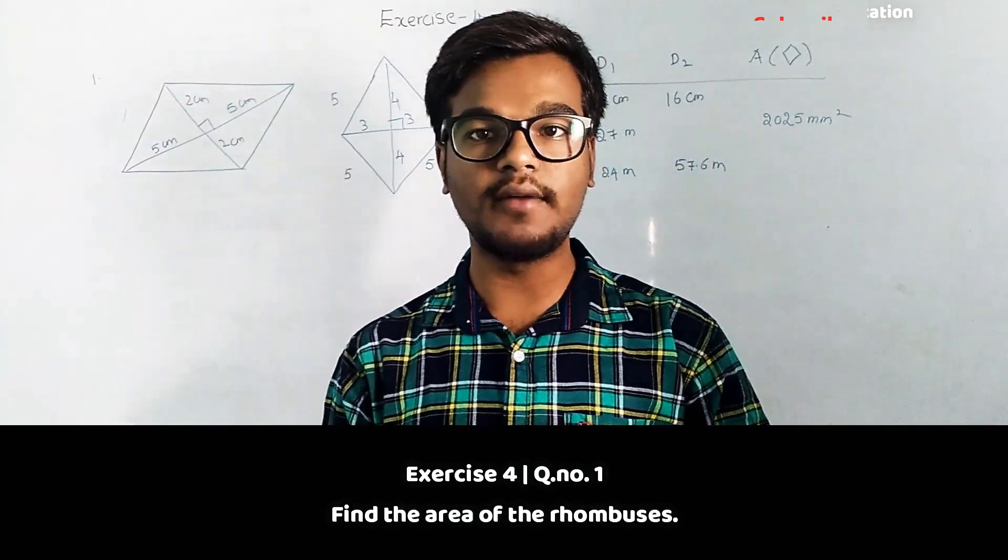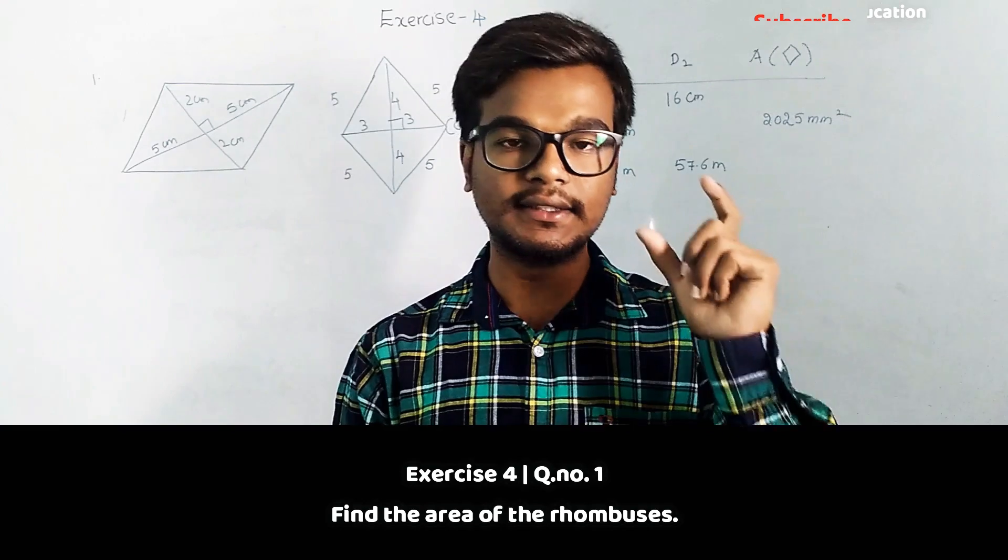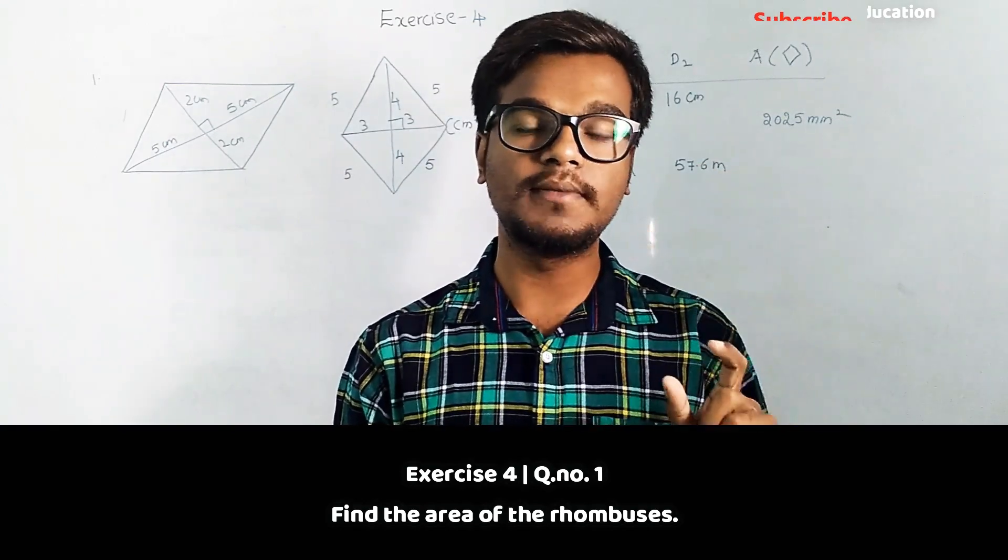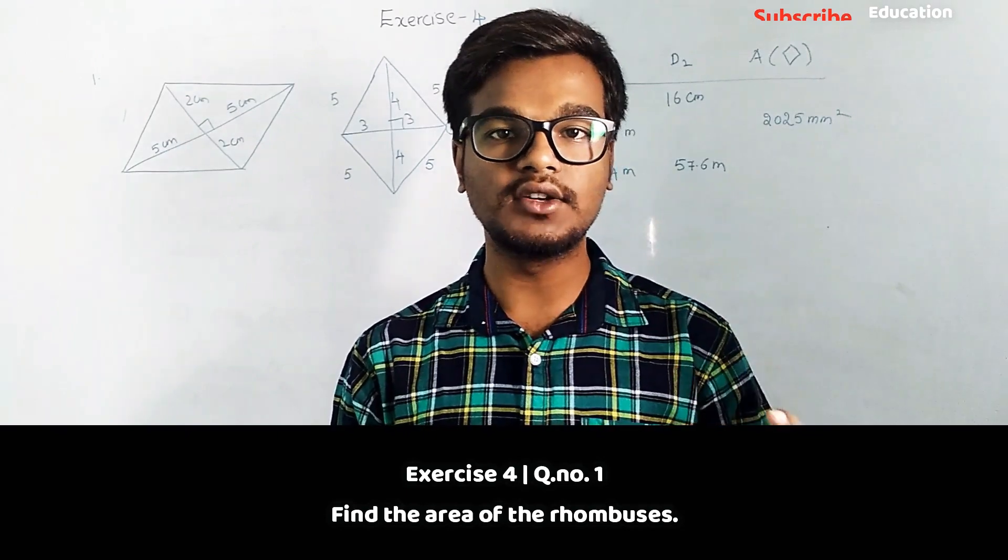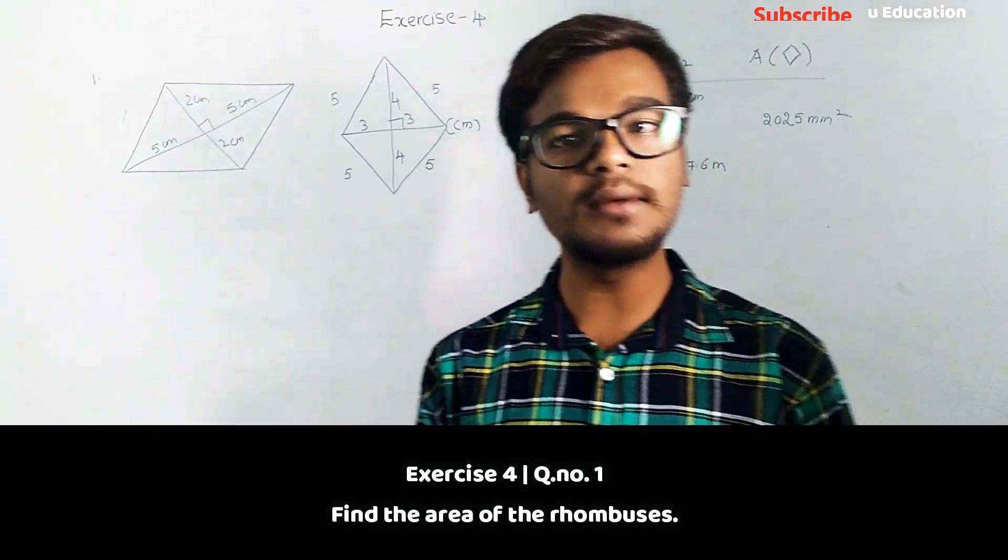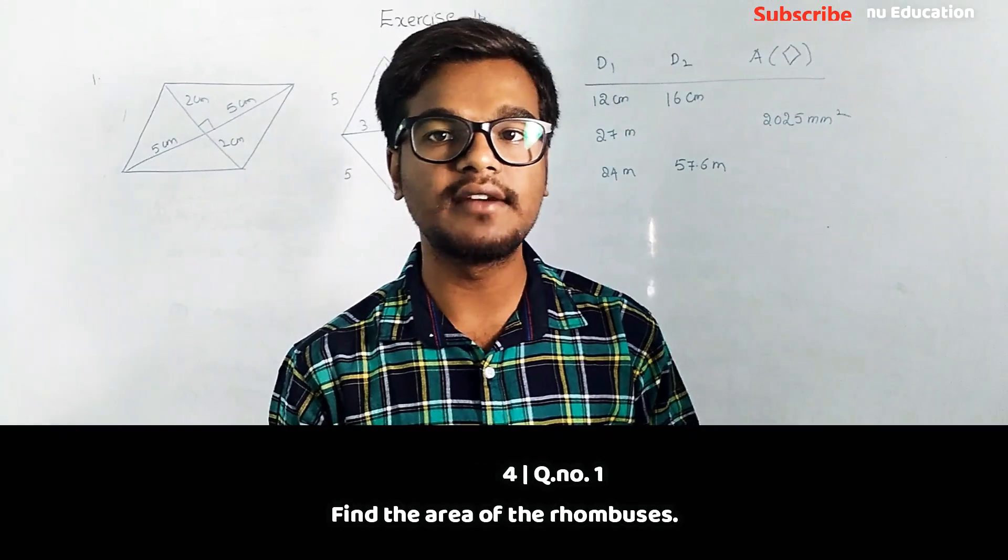The formula is half into d1 into d2. So when thinking about rhombus, first you have to think about diagonals, product of diagonals. It's like parallelogram only - parallelogram area will be base times height, but here we will consider diagonals instead.